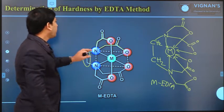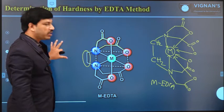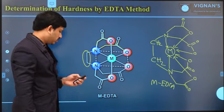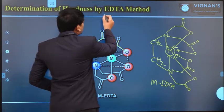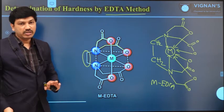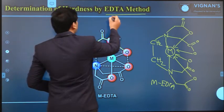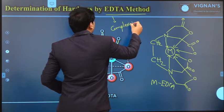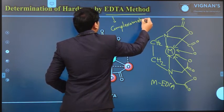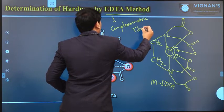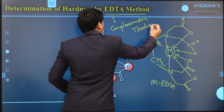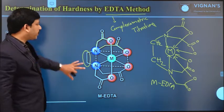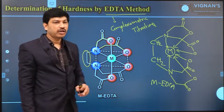Whenever you provide EDTA to the hard water sample, immediately there is a formation of the corresponding metal-EDTA complex. During the titration process, there is always a formation of metal complexes — that is the reason this is also known as complexometric titration, because during the titration process there is a formation of metal-EDTA complex.